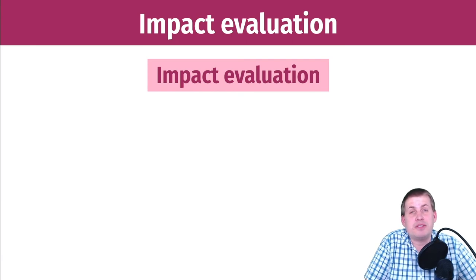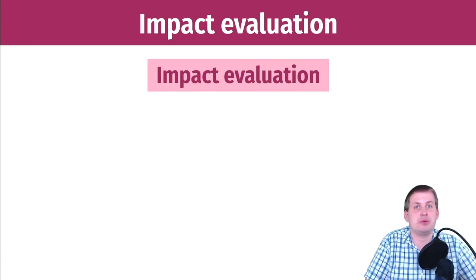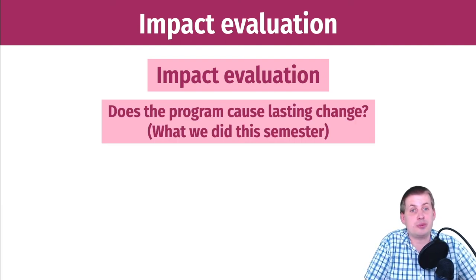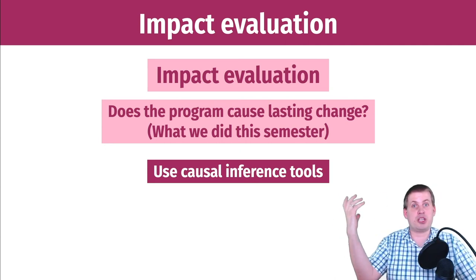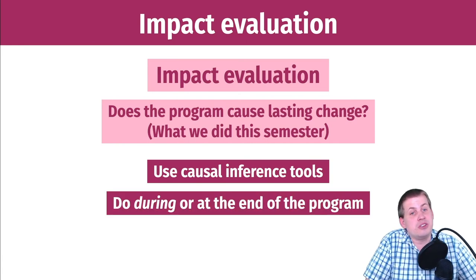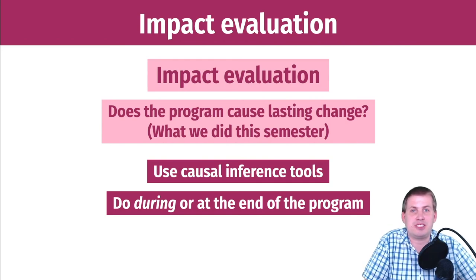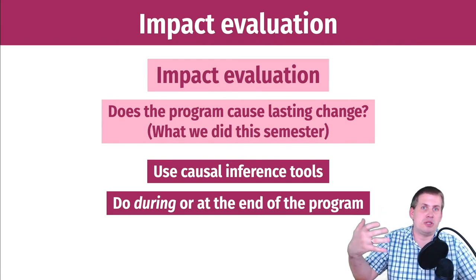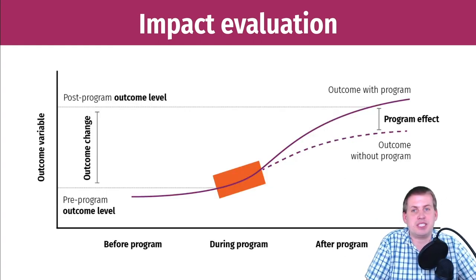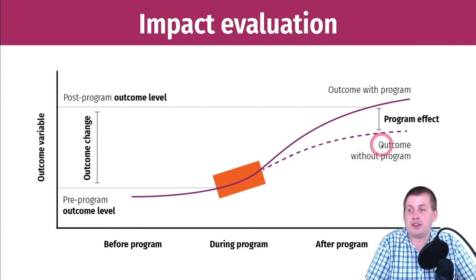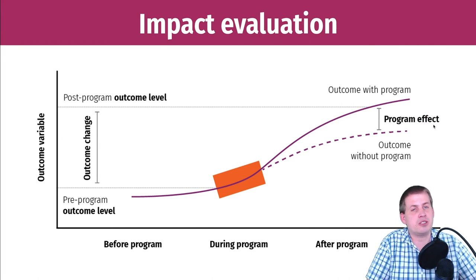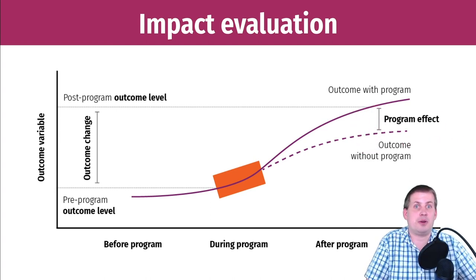The last type of evaluation is impact evaluation — what we've done in this class, so you're all experts at this now. The main question is: did the program cause lasting change in society? You answer that with causal inference tools. The core intuition is that you want to measure the difference between the outcome with the program and the outcome without the program — that's your causal or program effect. The only way to find that counterfactual is to identify a control group, which is what we've focused on all semester.